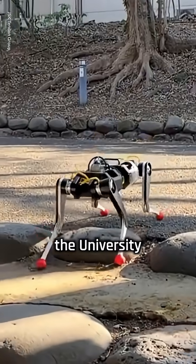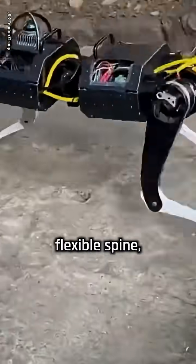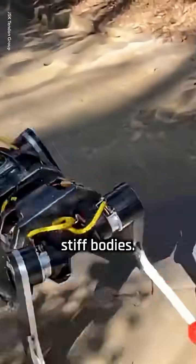Developed by researchers at the University of Tokyo, the Klein RoboDog is a four-legged robot with a flexible spine, unlike most RoboDogs which have stiff bodies.